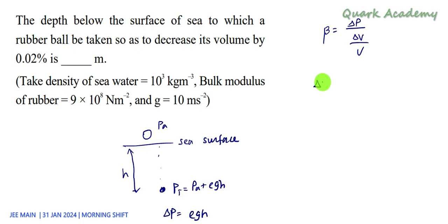So let me write: change in pressure equals beta into ΔV by V. So change in pressure is ρgh. This is beta. Change in dimension, that is 0.02 by 100, V divided by V. So in this particular thing, we got it from this information: 0.02 percentage.